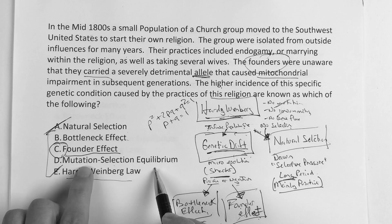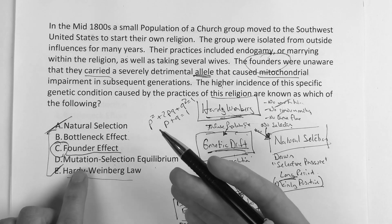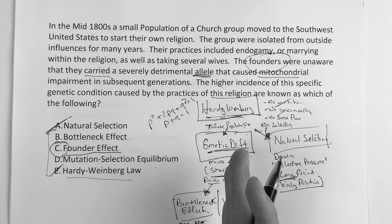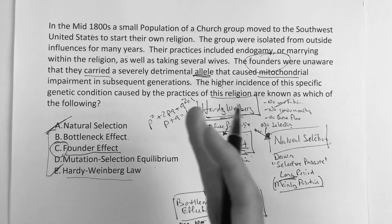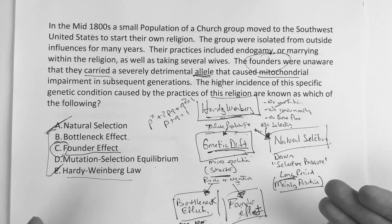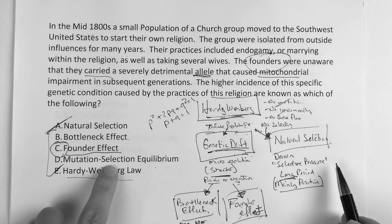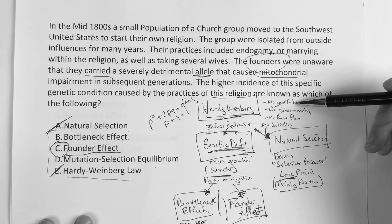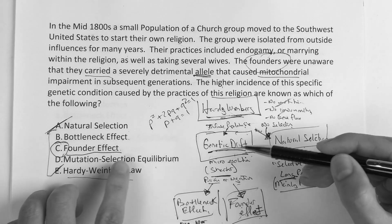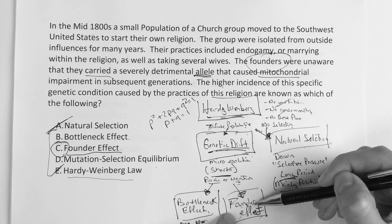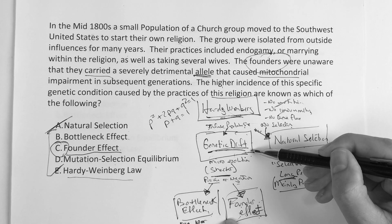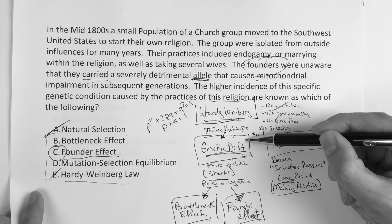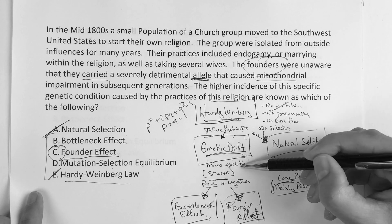Mutation selection equilibrium refers to the balance between a bad trait being eliminated through death or selection against it, while new alleles of that same type arise through de novo mutation, keeping the trait present in the species. That's not what this question describes. So the only answer here is founder effect. Genetic drift could have been an answer choice, but founder effect is more specific and falls underneath genetic drift.